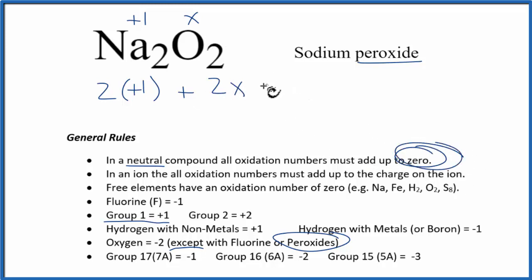And that's all going to add up to zero because it's a neutral compound. So we would have 2 plus 2X equals 0, 2X equals negative 2, divide both sides by 2, and X will equal minus 1.